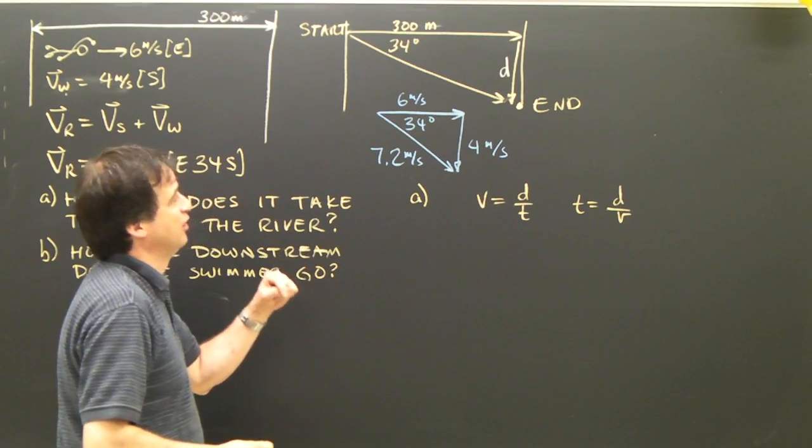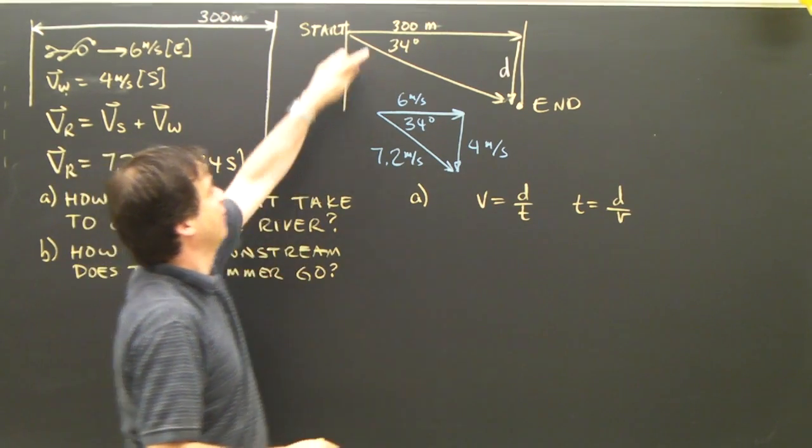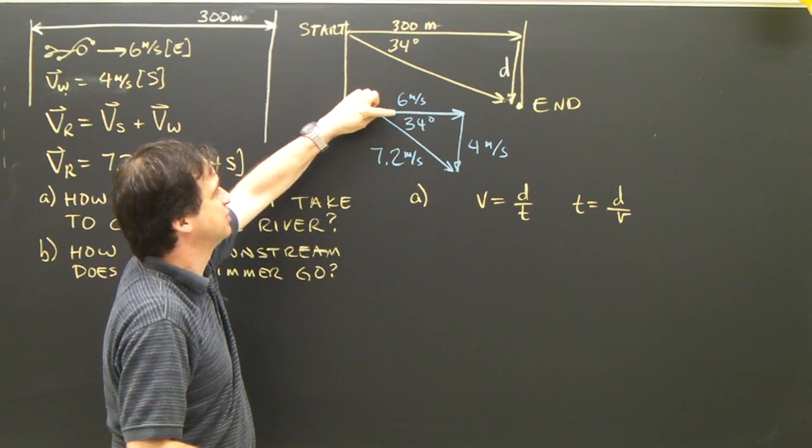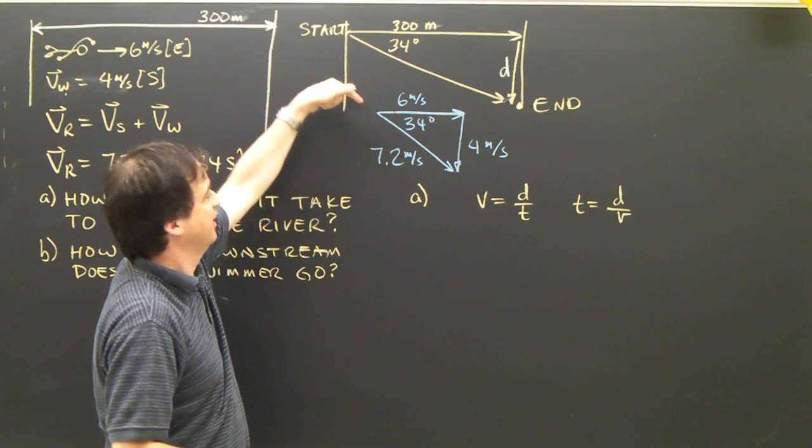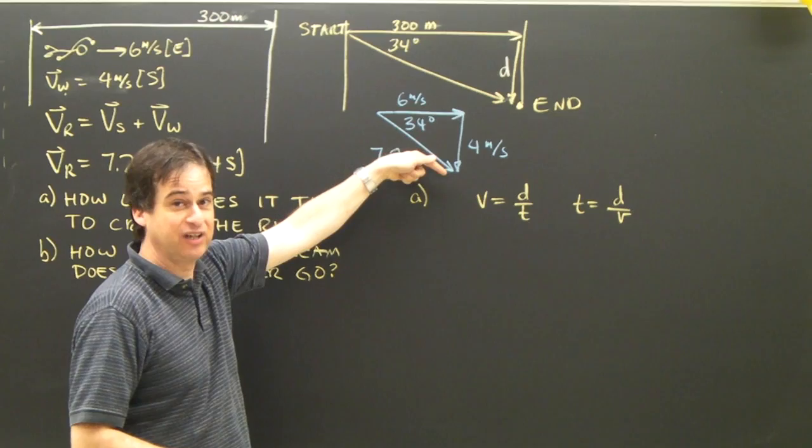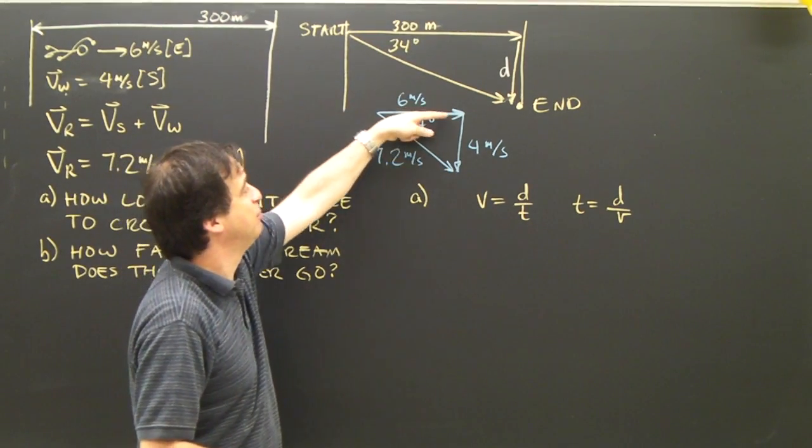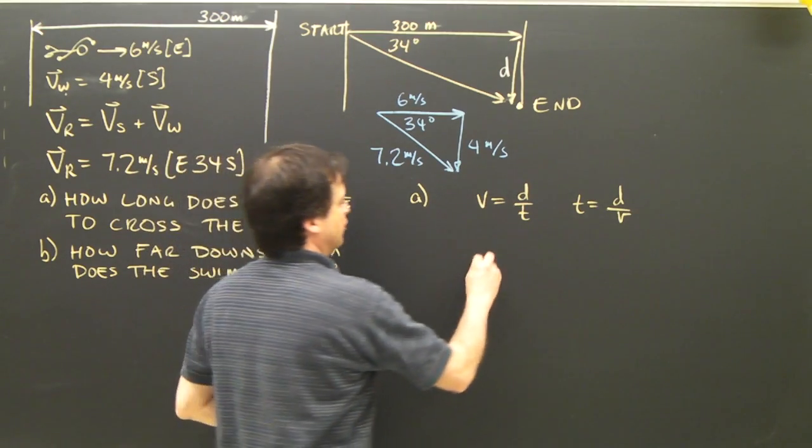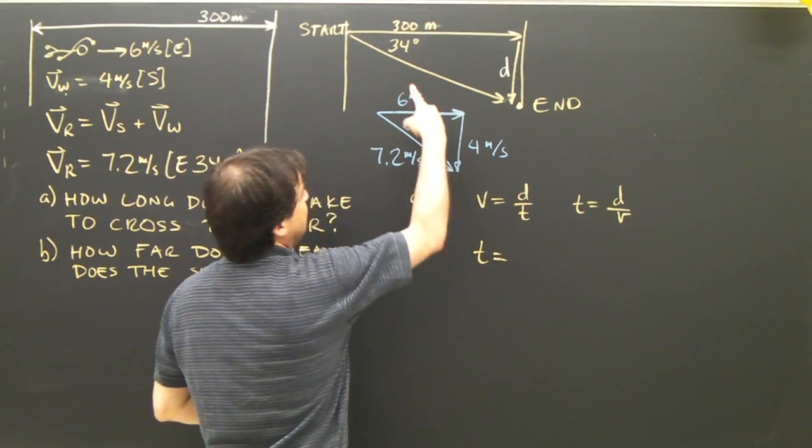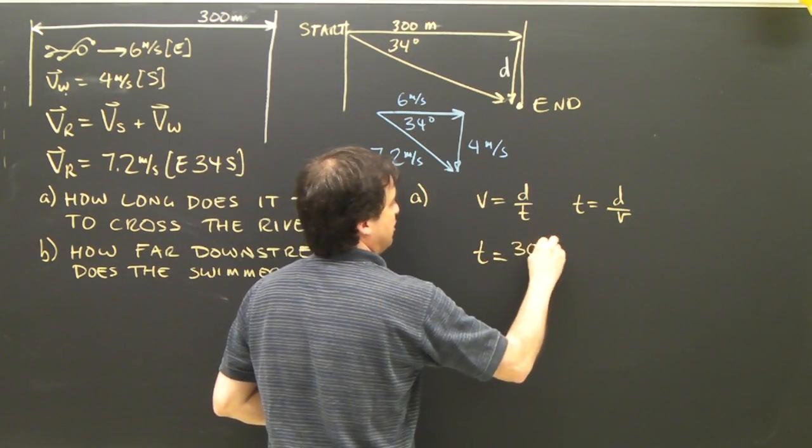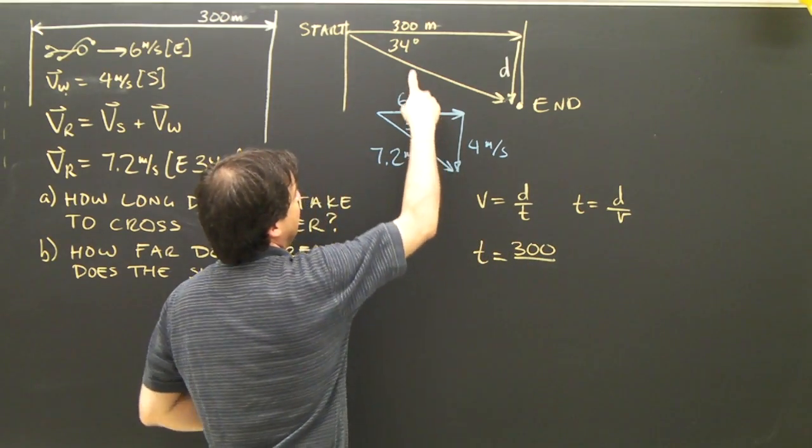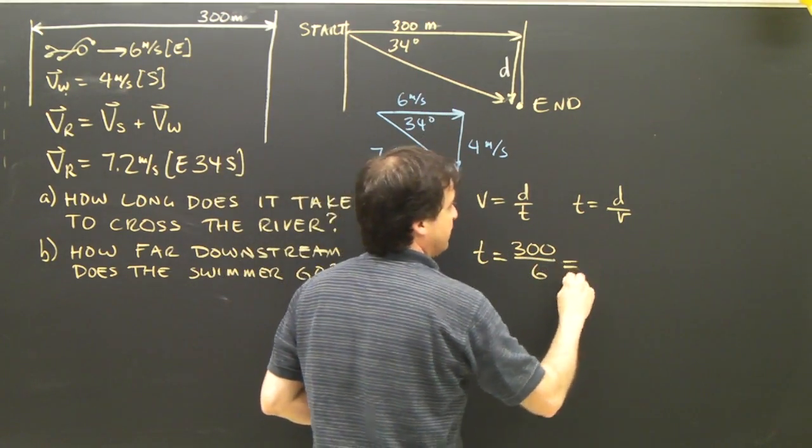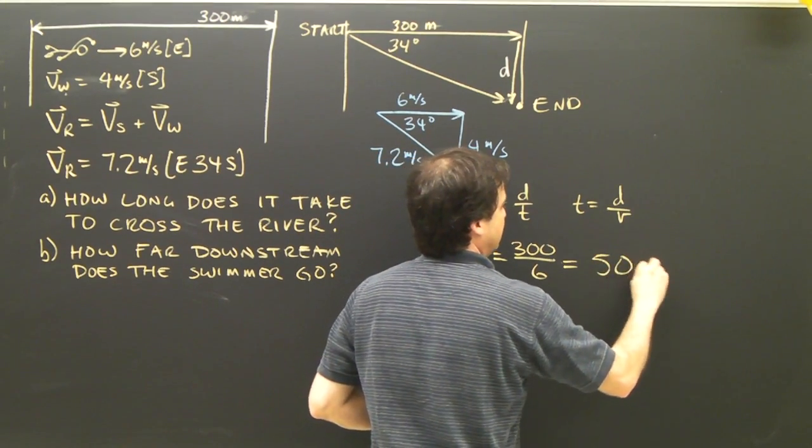So I need a distance and a velocity. Well, I've got a matched pair. This 300 meters from one side of the shore to the other matches up with this velocity. Again, this is the velocity that's actually happening. But this is the component in the direction of the displacement. So I can use those two. T equals distance, 300 divided by 6 is 50 seconds.